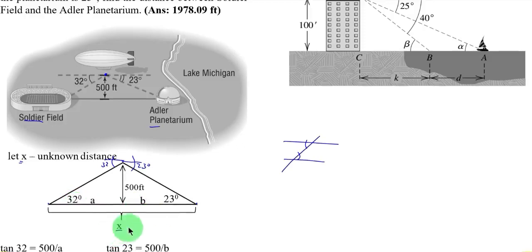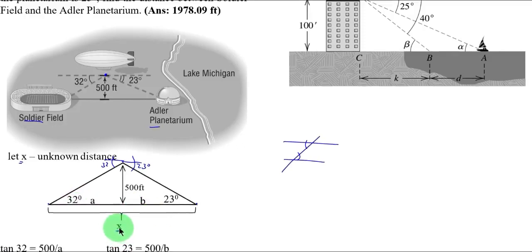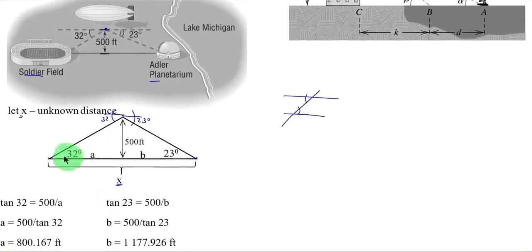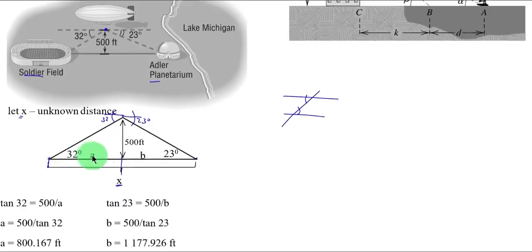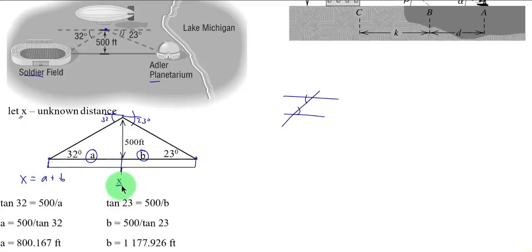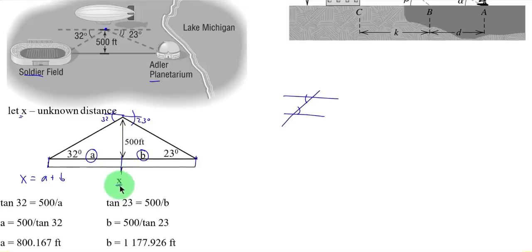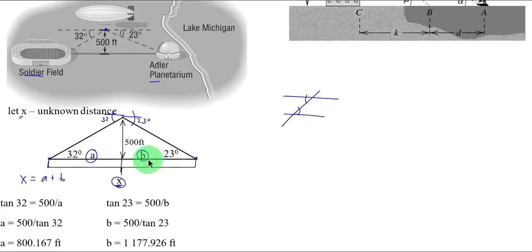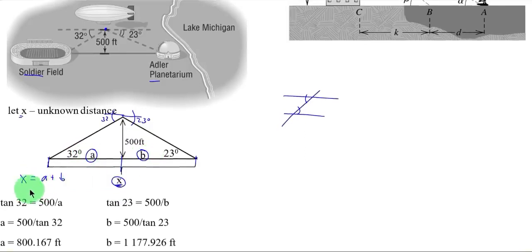So again, the unknown here is x. Now we can solve x by simply adding this distance. Let us denote that as a and the distance, let us denote that as b. So the unknown here, which is x, is simply equal to a plus b. Since we don't have formula which can solve directly the unknown, which is x, we can solve first for a and b. Then add both, you can solve the unknown, which is x.